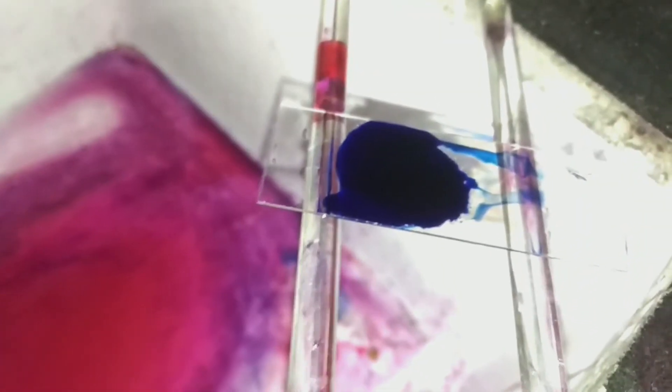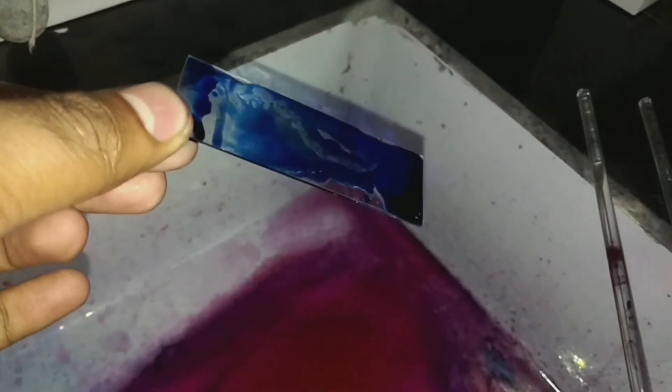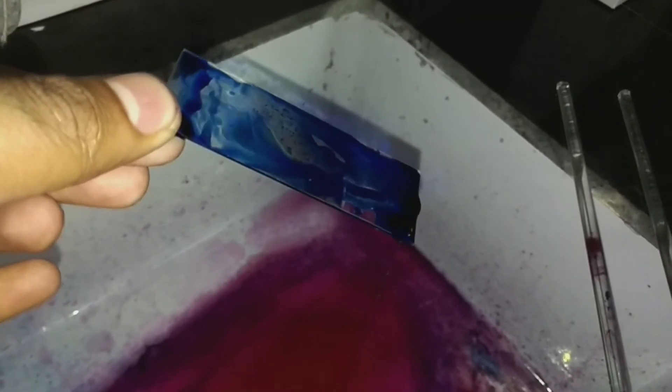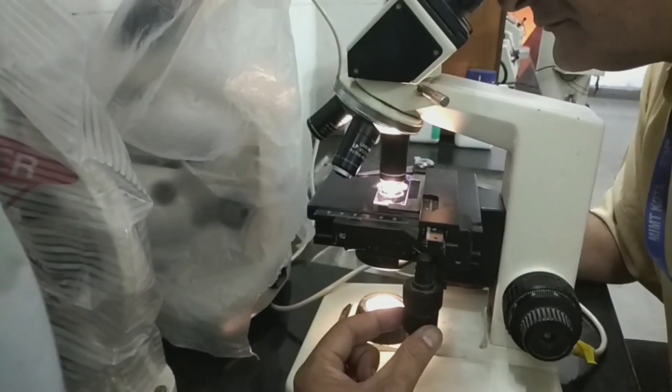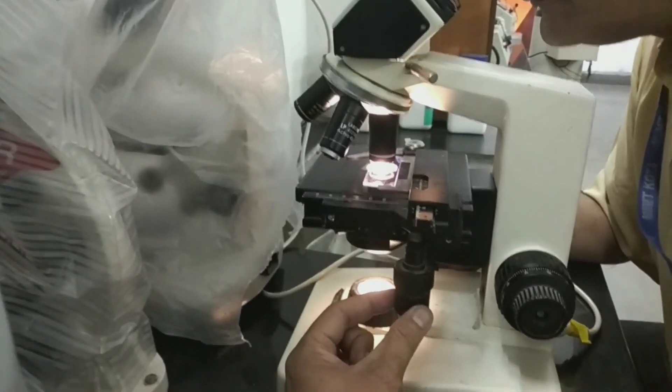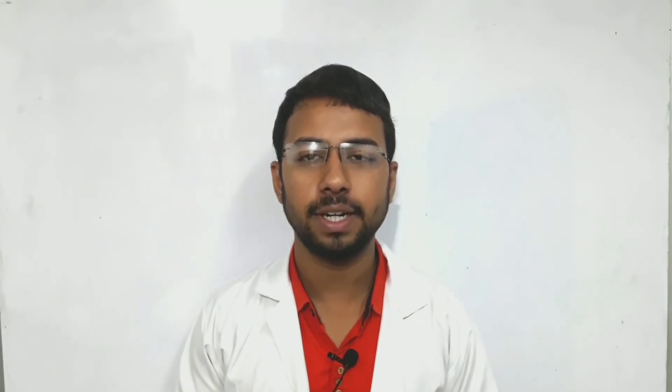Now stain the slide with methylene blue for one minute. After that, wash the slide again with distilled water or tap water. Dry the slide and examine it under 100x magnification with oil immersion on the microscope. You will see the bacteria appear reddish in color while the background appears bluish.